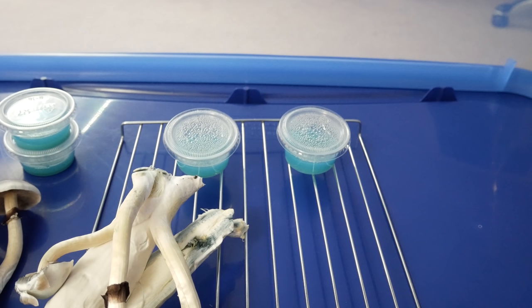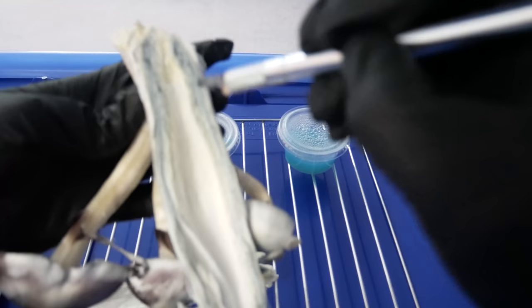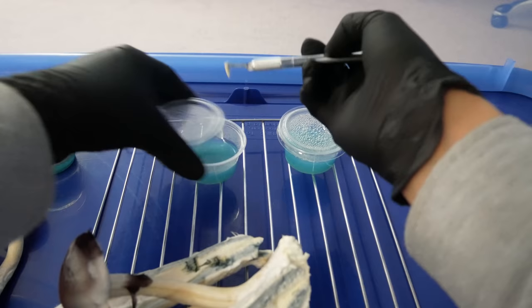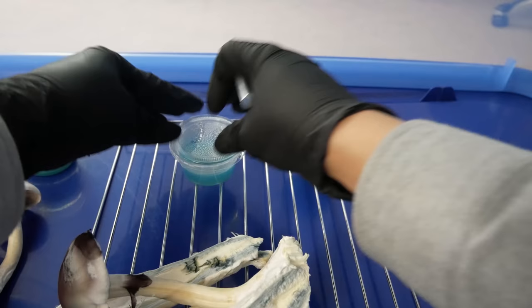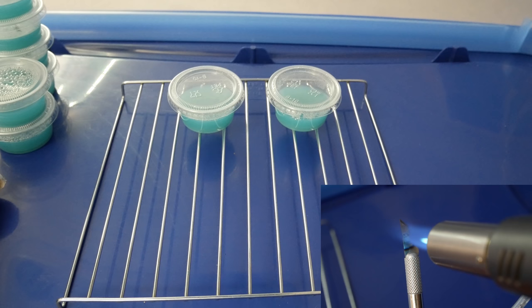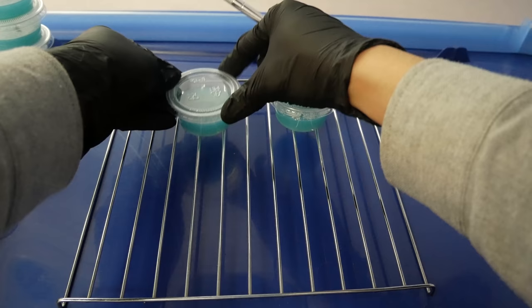And again, we'll flame sterilize our blade. Right on the agar. Here I'm sanitizing my hand with isopropyl alcohol before I handle this fruit. Go ahead and flame sterilize my blade. I'll loosen up my agar cup lids here.